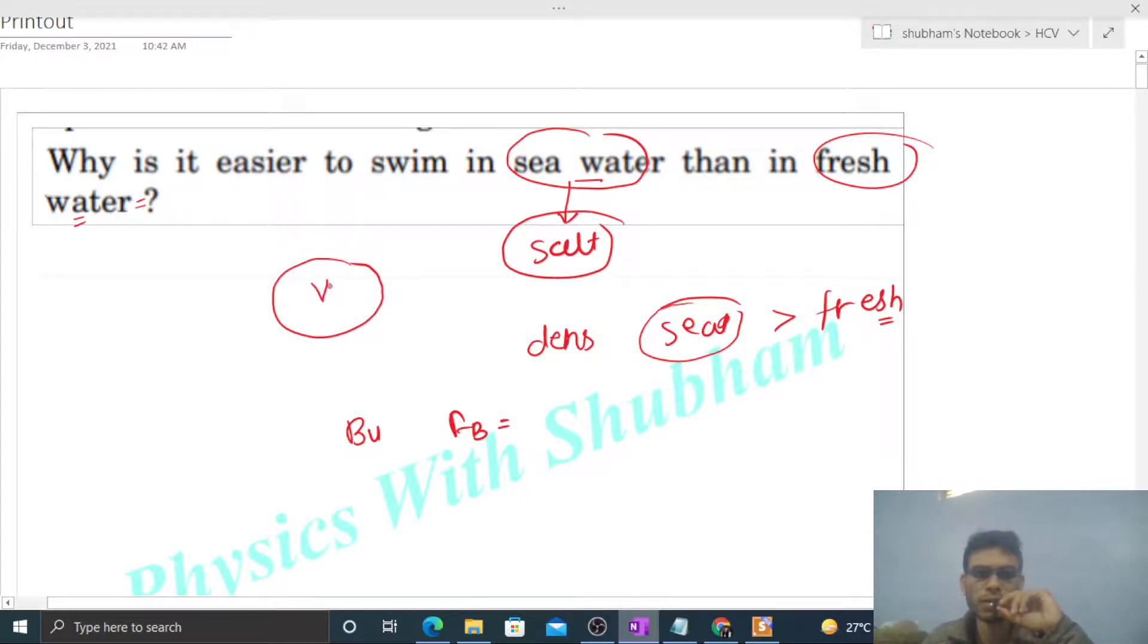Then what will be the value of buoyancy force? It will be simply volume into density of the liquid into g. Now you can see v is constant, g is constant.